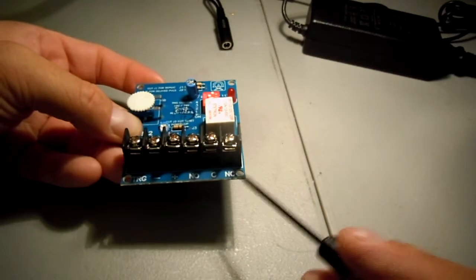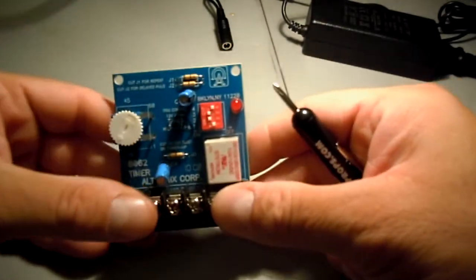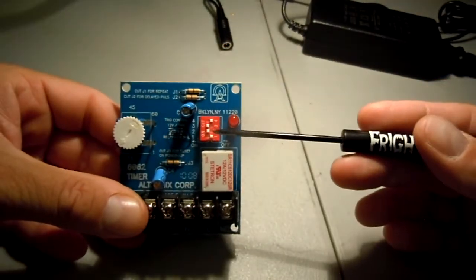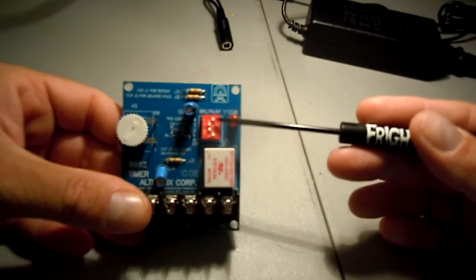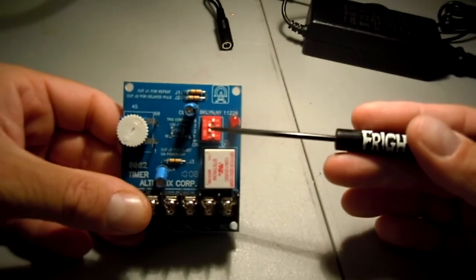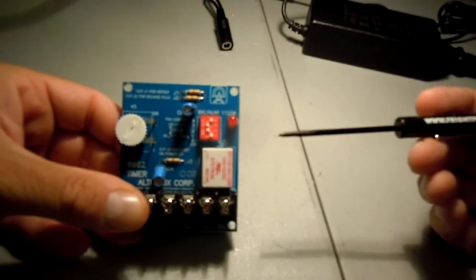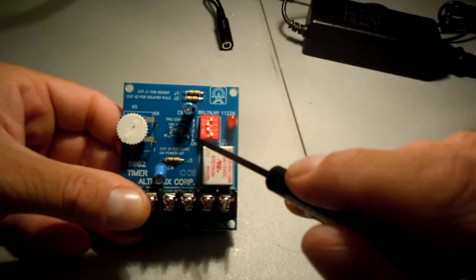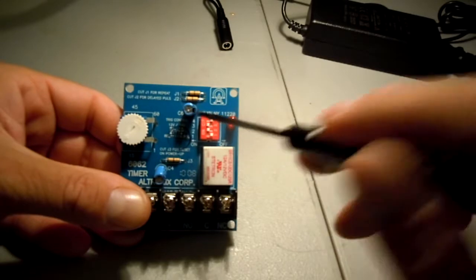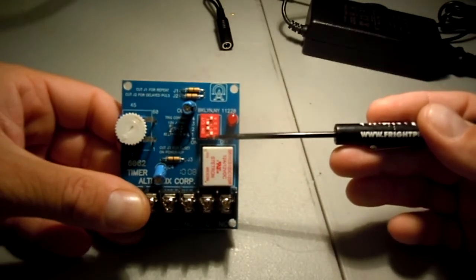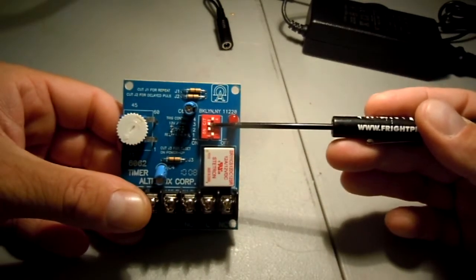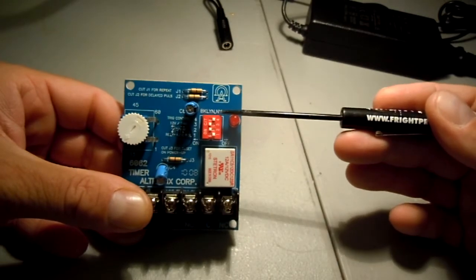For our application, since we're just going to turn on a wiper motor and turn it off, we're not going to be using the NC at all. On the dips, I can't remember if I had to move them, but for our application one is on the bottom, four on top, one being off, two and three being on, and four being off.